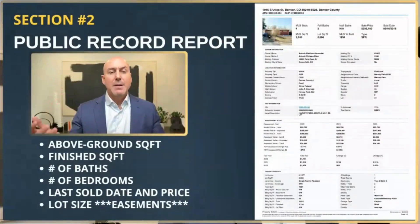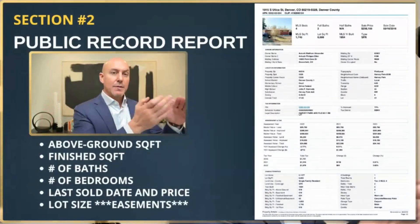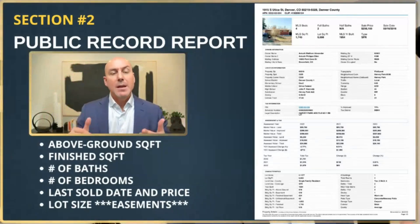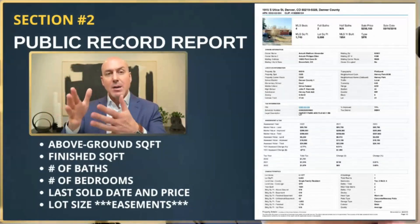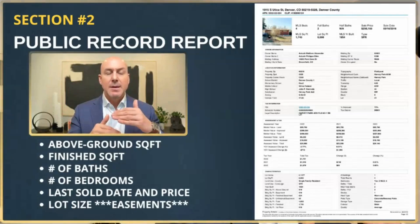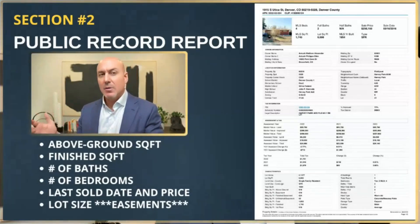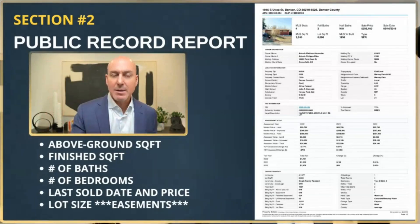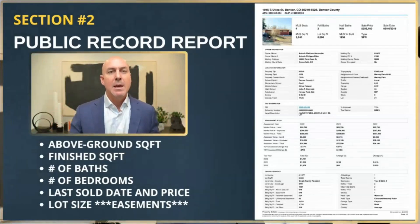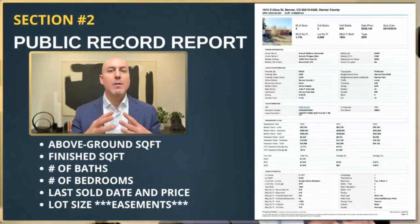The next thing we do is we have to get the public record information. We've got to know everything about the property that we possibly can. We already did our seller profile — that second page asks all the other questions. What I'm doing here is making sure that what was recorded with the county and what they told me — are there any discrepancies? I thought the basement was unfinished, but this is telling me it's finished. I thought it had a three-car garage, but they told me they had a two-car garage.